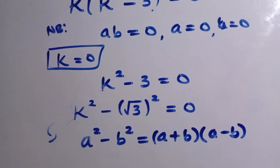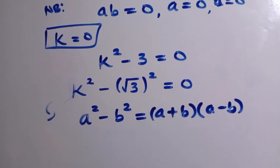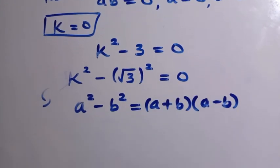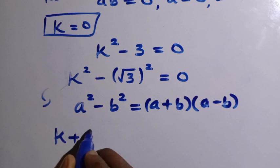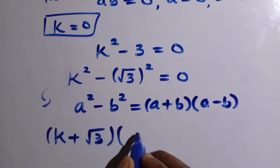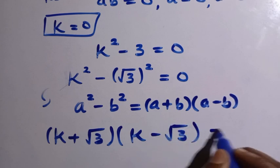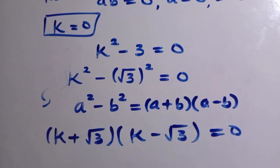Then we are going to apply it here. So we have the value of K here which is our A, and B is root 3. So when we substitute it here, we have this as K plus root 3 and also we have K minus root 3 equals 0.